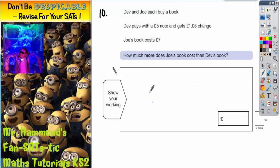Question 10 is all about buying books. Dev and Joe each buy a book. Dev pays with a five pound note and gets one pound five change. Joe's book costs seven pounds.